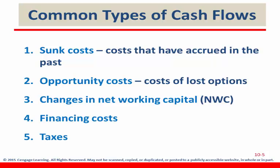Next is changes in net working capital. Sometimes you need money up front to get a project going, so you put that money in with the initial cost, and then you get it back in the last year of the project — so it's relevant. Financing costs are never going to be relevant because you're going to use a WACC, so they're already factored in. Things like interest and dividends — if you counted them here in the problems we're doing, you'd be essentially double counting, because you're going to use that information to get the weighted average cost of capital.